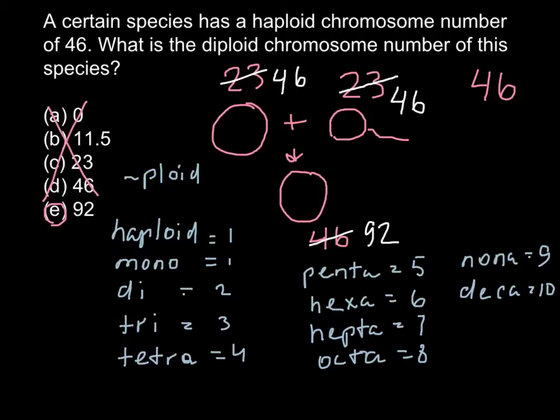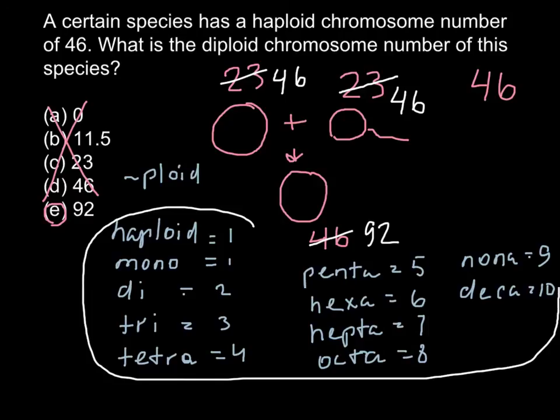But I never heard about nonoploid or decaploid. Probably we can get it artificially. But the ability to count from one to 10 in Greek is enough for you for the ploidy level. And also if you memorize this table, it's very useful for your chemistry class as well as genetics, of course.